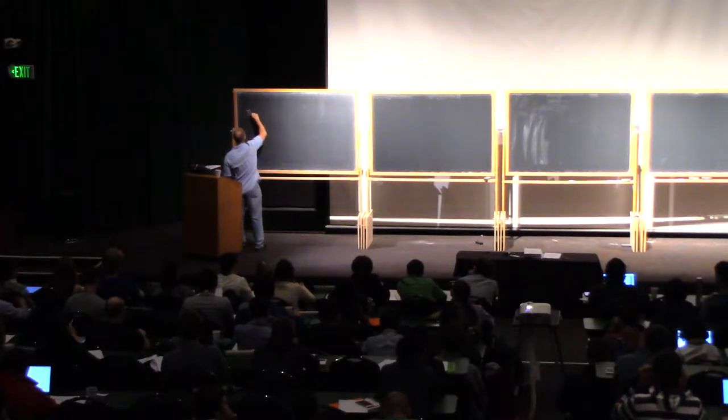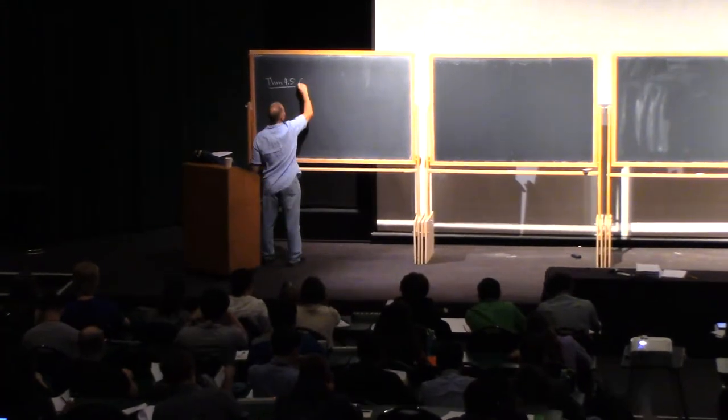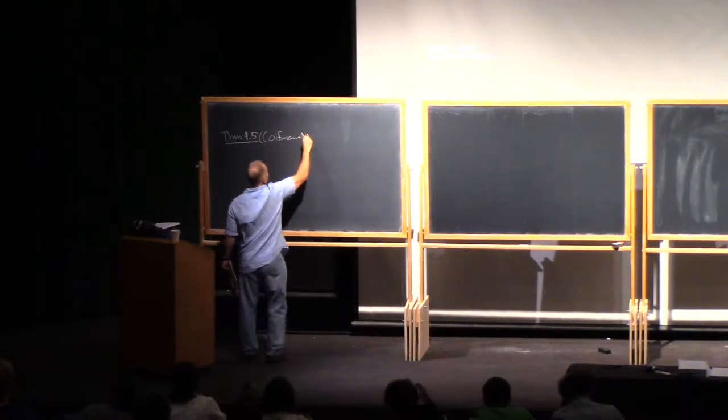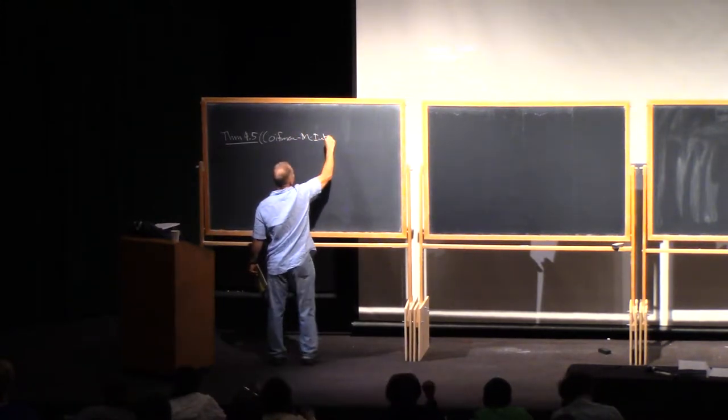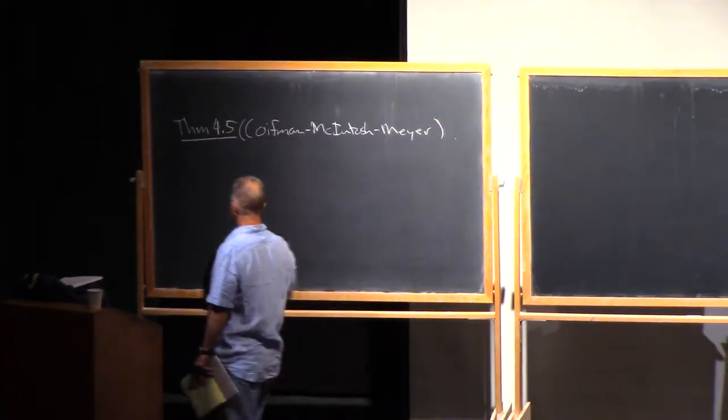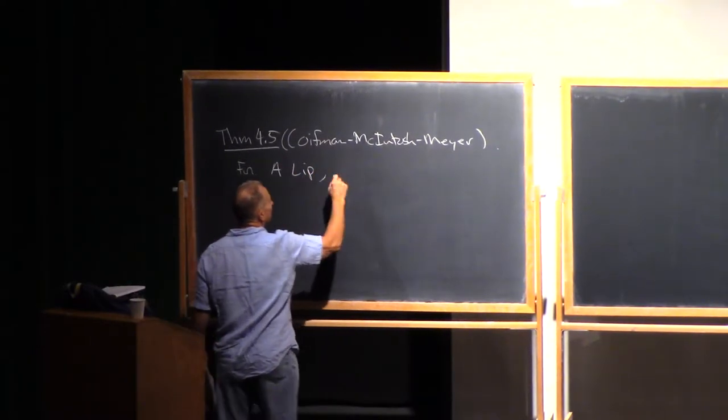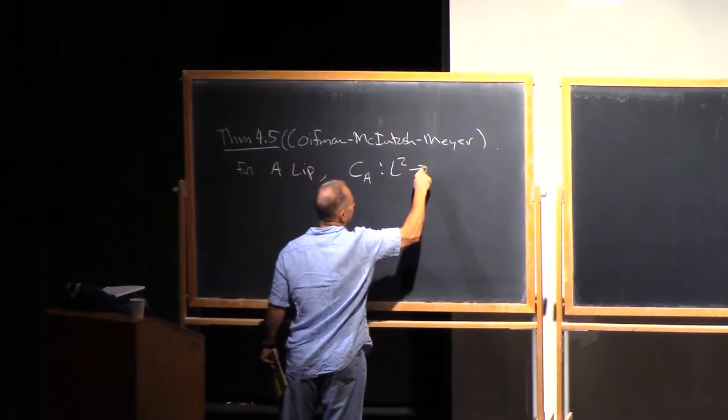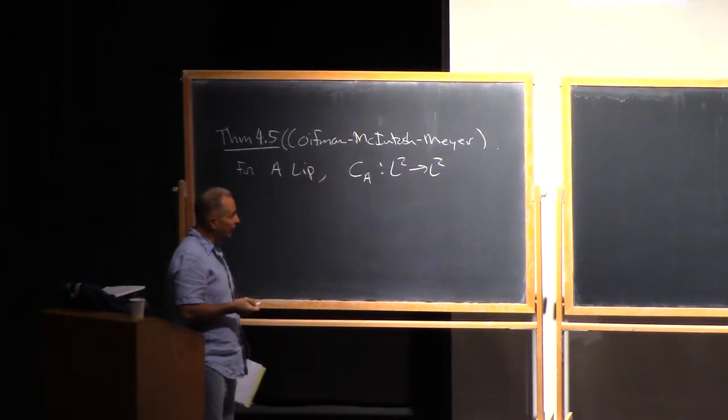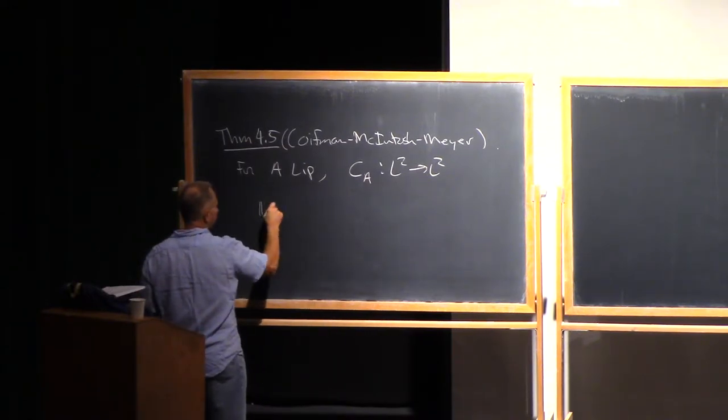So the next thing that I want to do is to at least sketch the proof of the famous theorem of Koifman, McIntosh, and Maier, which says that for A Lipschitz, the operator CA, that is the Cauchy integral along the graph of the Lipschitz function A, is bounded on L2.